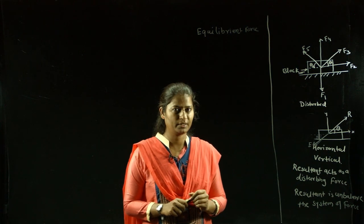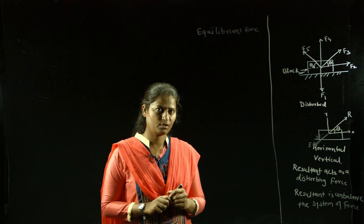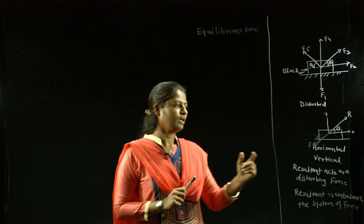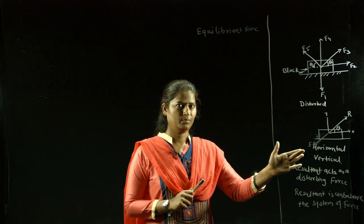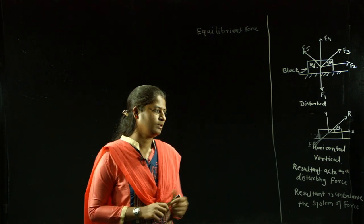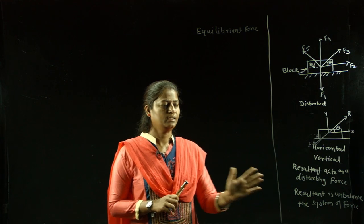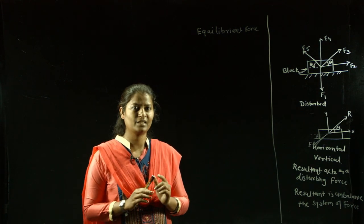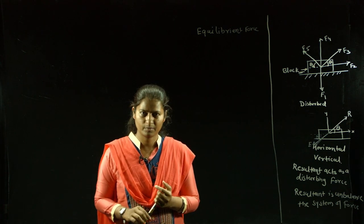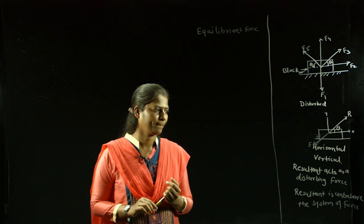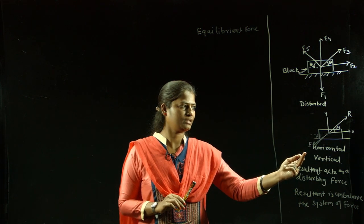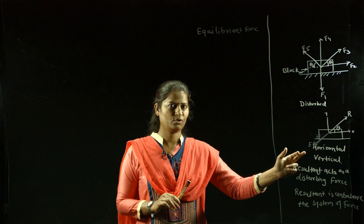The resultant R is nothing but the square root of the sum of squared force components. If the system is in equilibrium, the resultant equals 0. The equilibriant force cancels the resultant and maintains the system, so the equilibrium condition is used to keep the body in a state of rest.